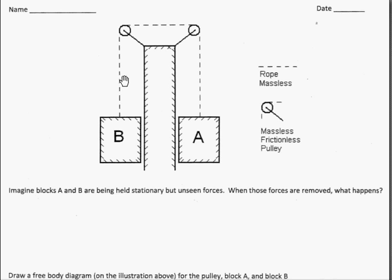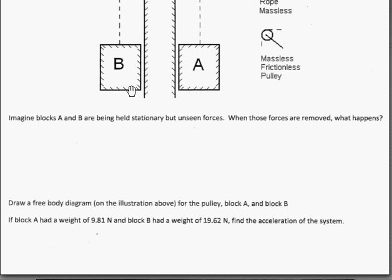This question is a little hypothetical, it's a little annoying. You're going to scroll down just a little bit and it says if block A has a weight of 9.81 newtons and block B has a weight of 19.62 newtons, find the acceleration.